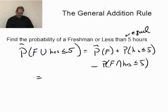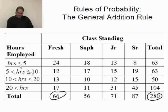plus the probability of working less than or equal to five hours, that is 63 out of 280, minus